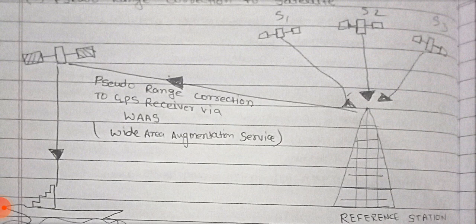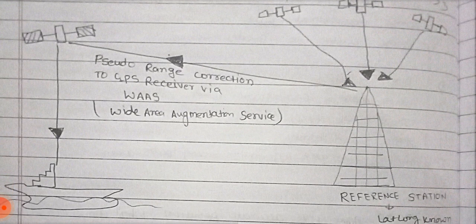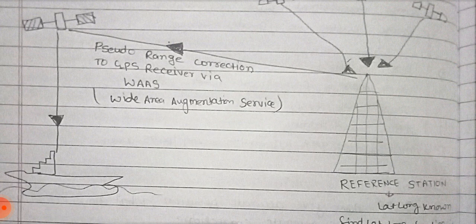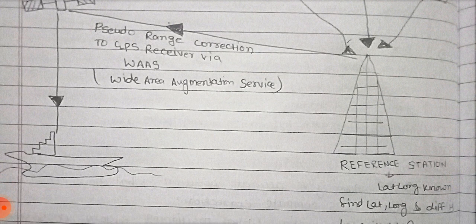The DGPS reference station transmits the pseudo range correction error via GPS satellites through Wide Area Augmentation Service. The satellite sends the error correction to the receiver on board when the range is more than 200 nautical miles. In these two ways, the DGPS applies the correction.